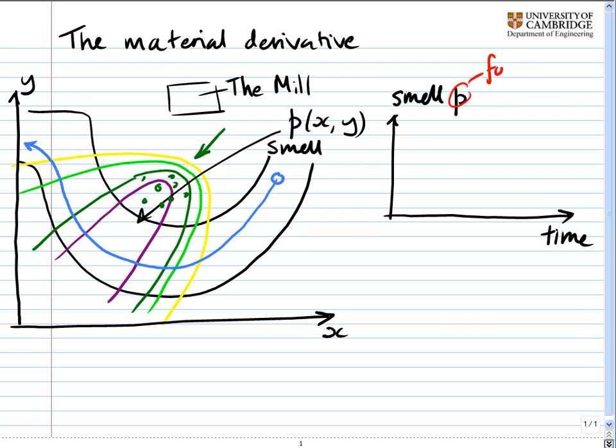So on the vertical axis, we're going to have the smell. And I'm going to call that p as well. But note there's a difference here. This is the p, if you like, following you. Or the smell that you smell. Whereas this is subtly different. It's the same thing, but it's a field. And it's a function of x and y.